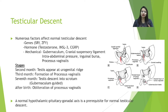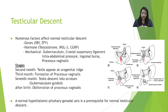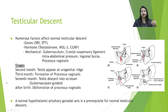Testicular descent occurs in several stages. Initially, a primordial germ cell originates from the coelomic epithelium, arising just medial to the mesonephros, and migration starts around 4 to 6 weeks. The testes are first formed, then the processus vaginalis forms by invagination of the coelomic cavity into the scrotal cavity. By seven months, testicular descent into the scrotum starts, and after birth there is obliteration of the processus vaginalis, for which a normal hypothalamic-pituitary-gonadal axis is essential.